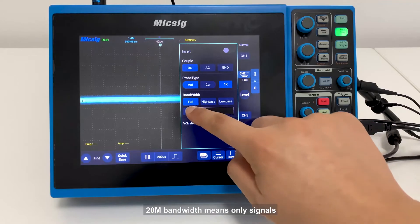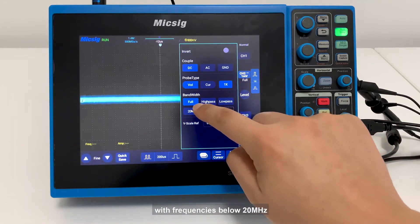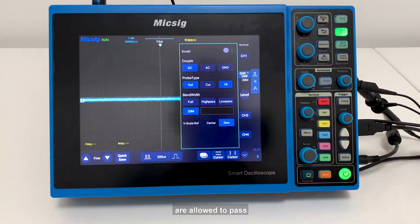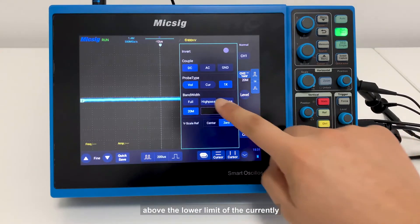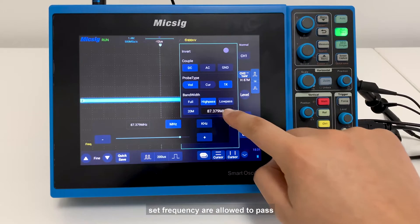20M bandwidth means only signals with frequencies below 20MHz are allowed to pass, and signals above 20MHz are effectively attenuated. High pass means only signals above the lower limit of the currently set frequency are allowed to pass.